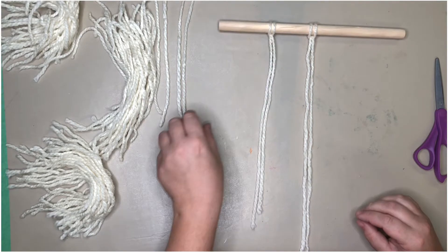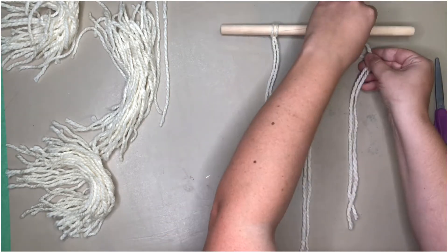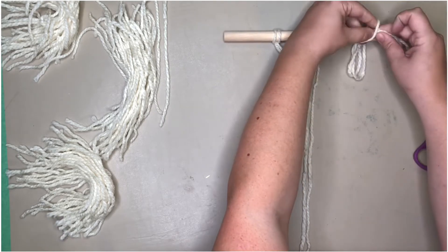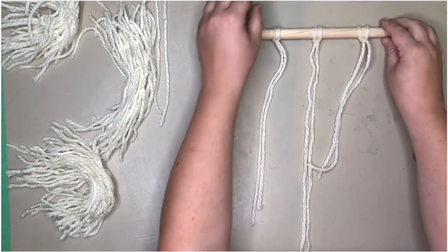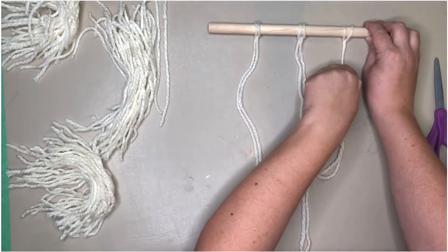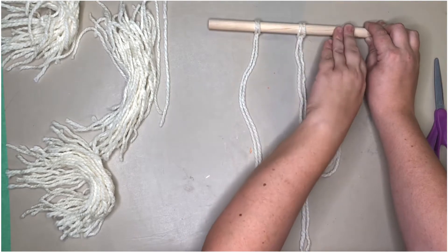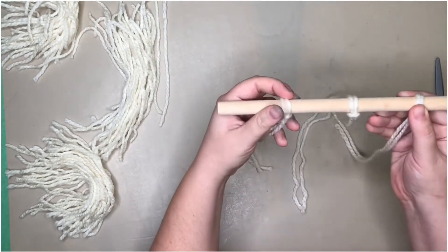To attach the first three on the dowel, I looped it through and then tied knots around the dowel. I think I did a double and a triple knot to keep the wall hanging yarn attached.